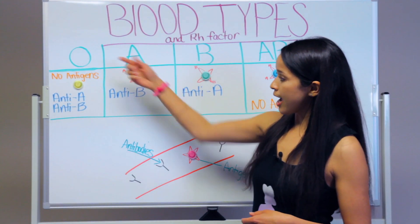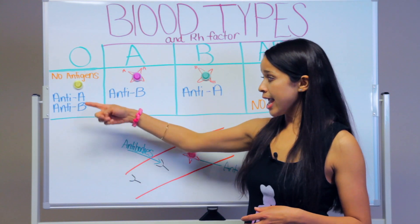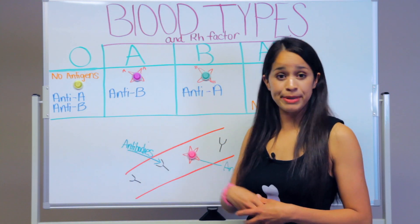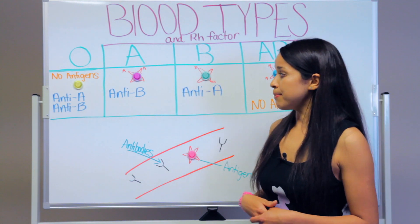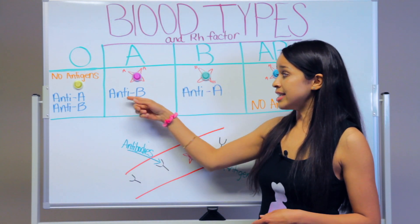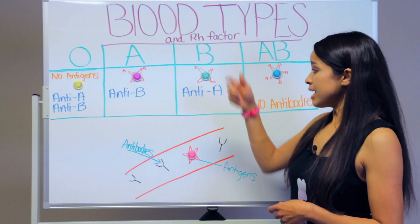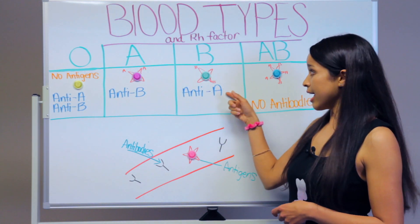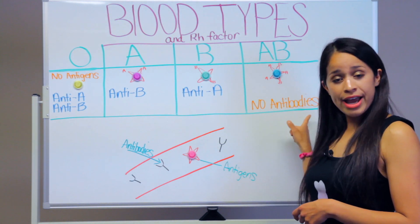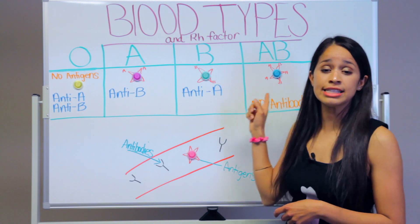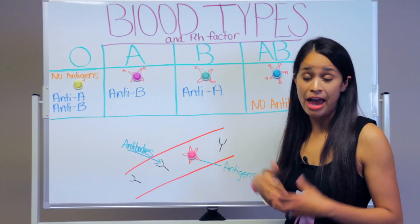Your O blood type has anti-A and anti-B antibodies. Your A blood type has anti-B antibodies. Your B blood type has anti-A antibodies. And your AB blood type has no antibodies, because it is the universal recipient — it can receive blood from everyone.